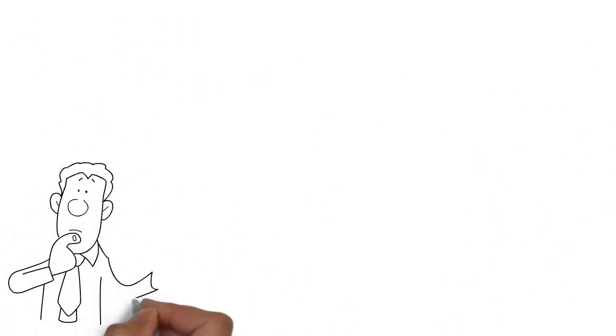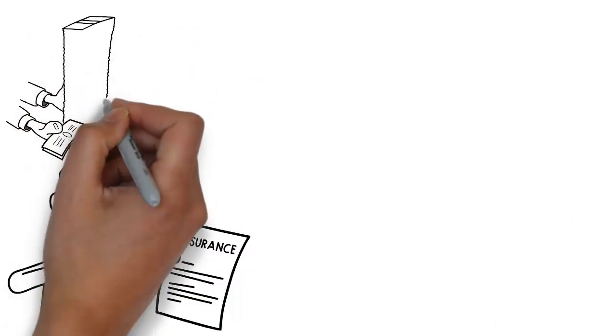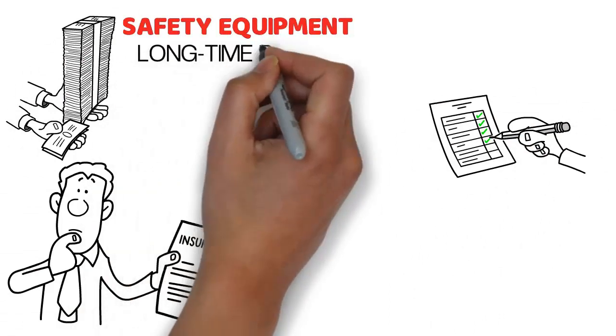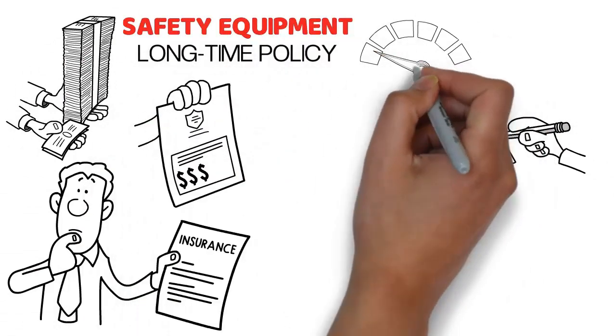Depending on the type of insurance you are considering, there are many ways to reduce the cost, such as multiple policies, safety equipment, long-time policy, and higher deductibles, which means a lower premium.